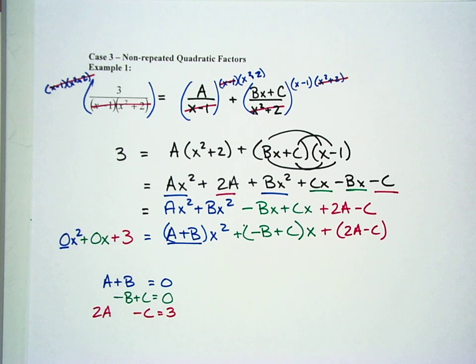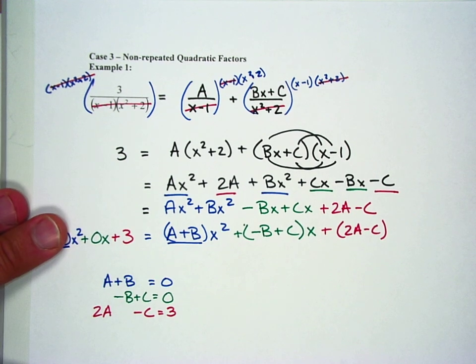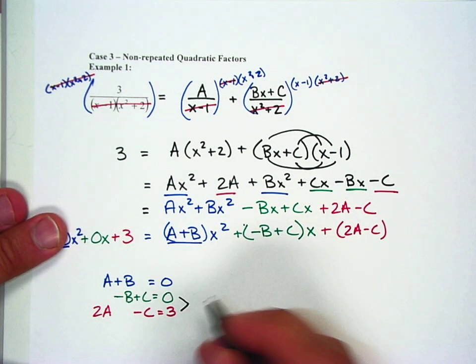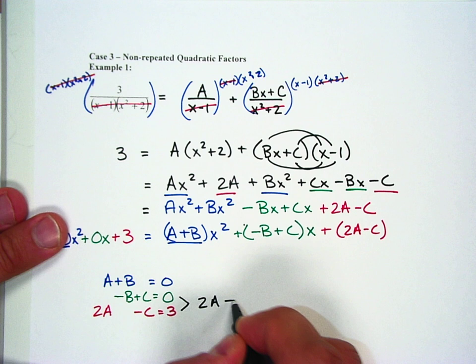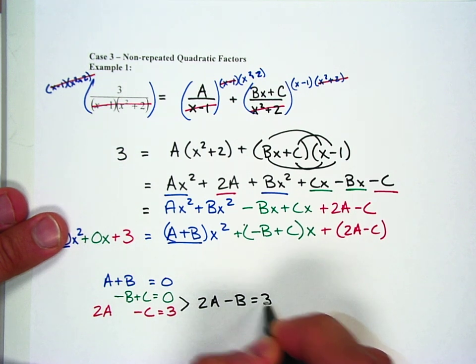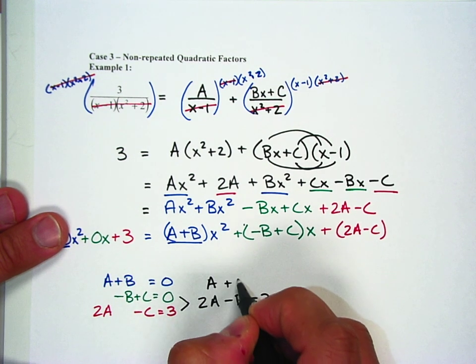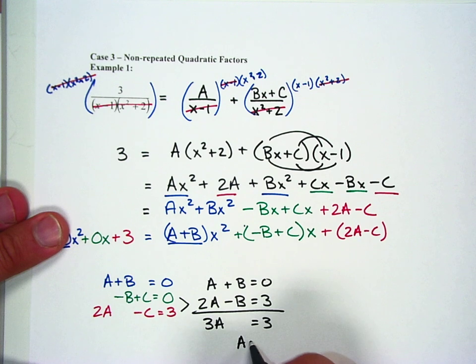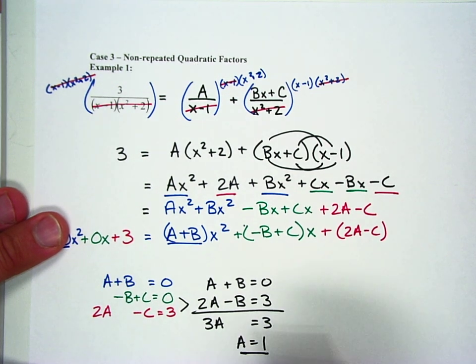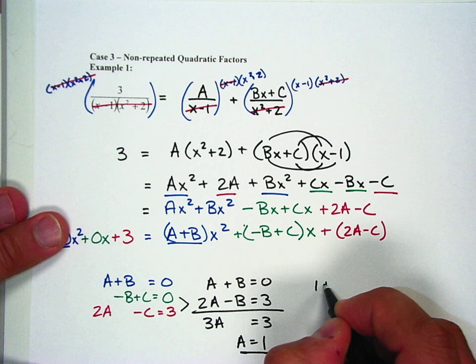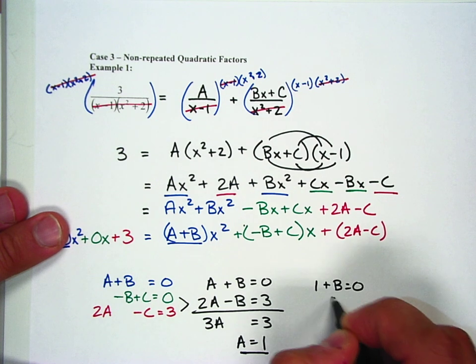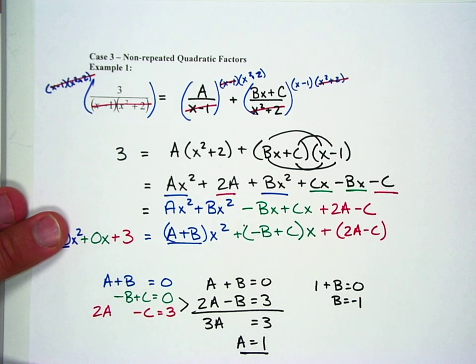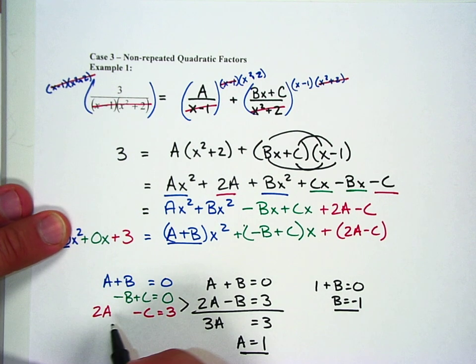If you want, you can put this into a matrix and solve it that way. But I'll just go ahead and take a look at this because if I combine these two, I get 2A minus B equals 3. If I combine the top one to that, I get 3A equals 3. So A equals 1. If A equals 1, I can plug it back in here and say 1 plus B equals 0.